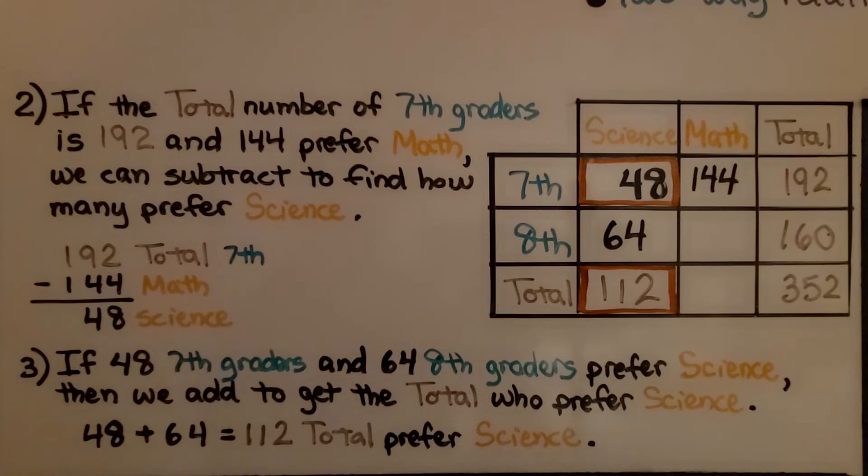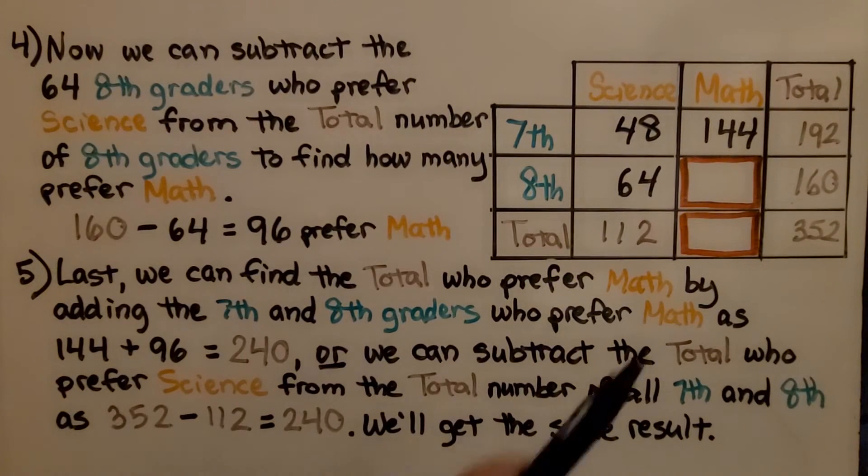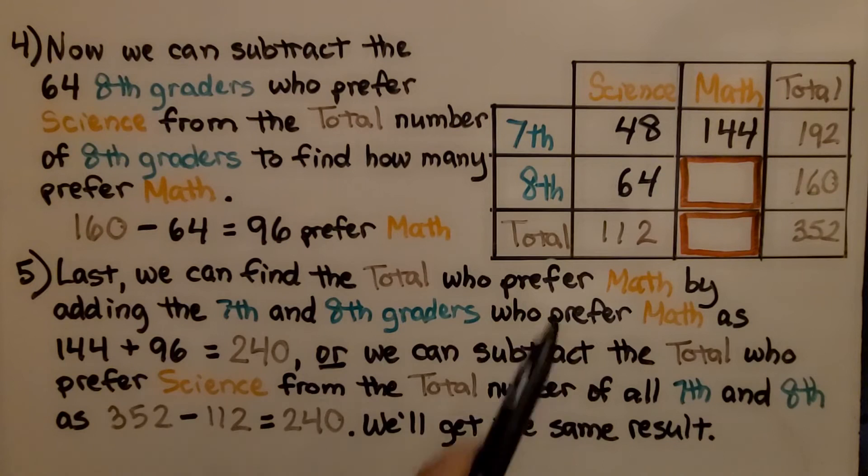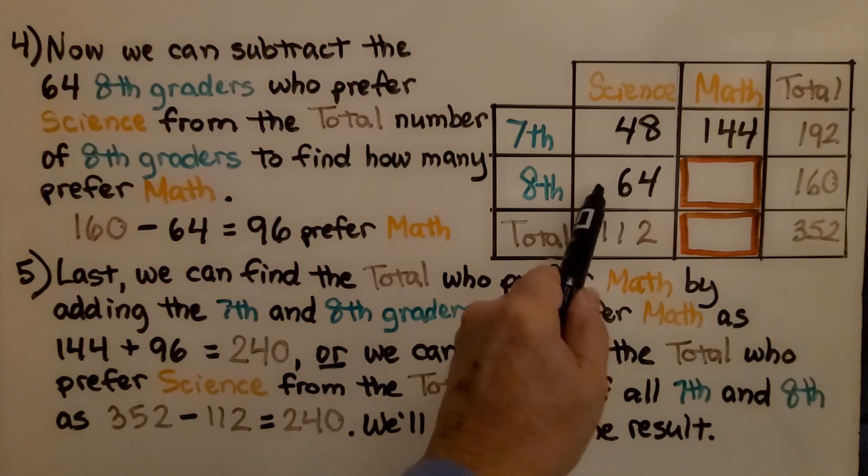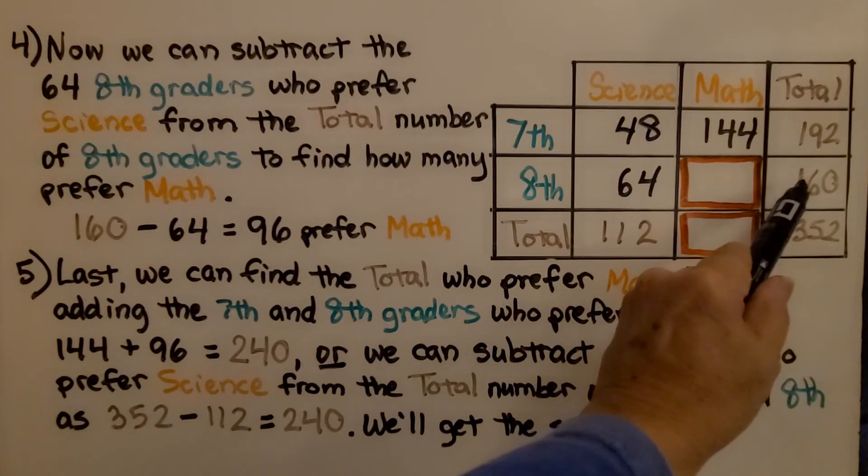Now we only have 2 cells left to fill. So let's do this cell. We can now subtract the 64 8th graders who prefer science from the total number of 8th graders to find how many prefer math.